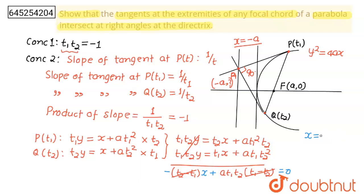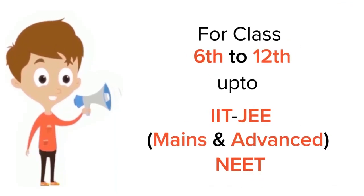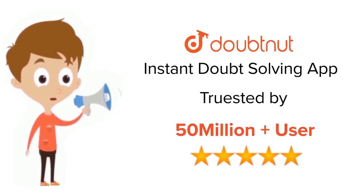So this is proved. Thank you. For class 6 to 12, IIT-JEE and NEET level — trusted by more than 5 crore students — download the DoubtNet app today.